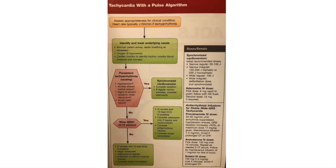One nuance: the AHA allows adenosine for a wide complex tachycardia of unknown etiology. If you say the word VTAC, adenosine should not be in that consideration because you've diagnosed it as VTAC. However, if the etiology is unknown and it could be SVT with an aberrant pathway, adenosine may be helpful. That said, if there is polymorphism or any irregularity, adenosine may be harmful and should not be given under those circumstances.